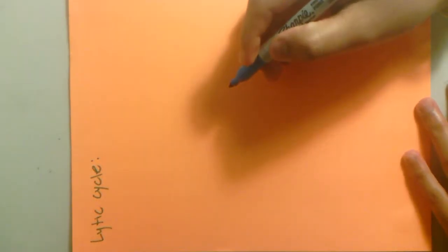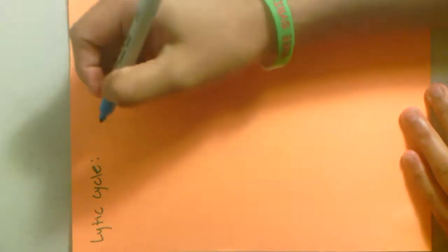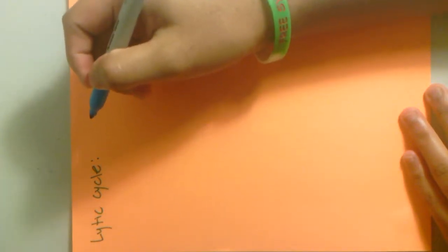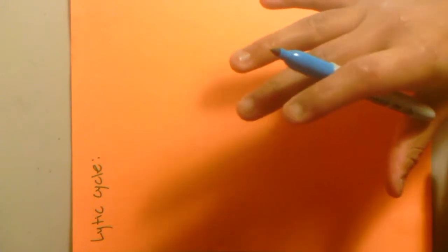Today we're going to begin with something called the lytic cycle. It's basically when a virus takes over all of the metabolic activities of the cell. So the steps of a lytic cycle begin as follows.